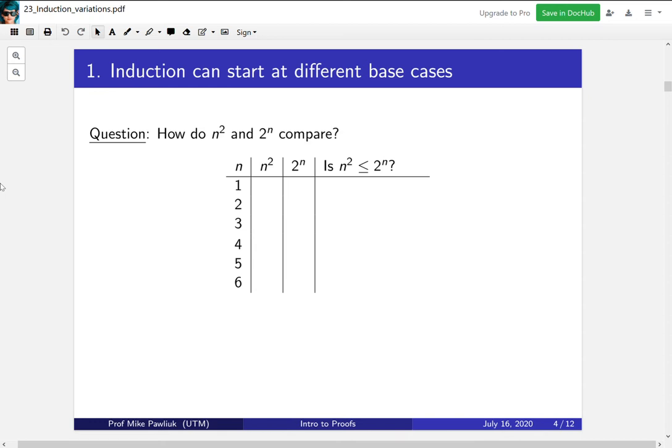In starting at a different base case, let's think about this motivating question. How do n squared and 2 to the n compare for various natural numbers n? Here's a table that I would like you to fill out. Fill out the values of n squared and 2 to the n and then answer the question: is n squared less than or equal to 2 to the n? Please do that now.